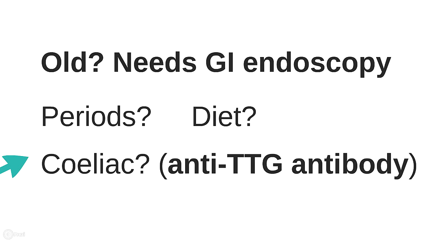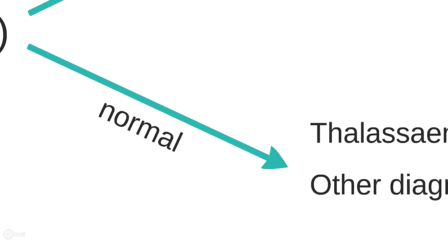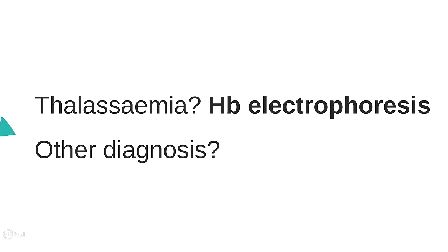Unexplained iron deficiency should also raise the possibility of celiac disease, and this will require revisiting the history and perhaps looking for an anti-TTG antibody in your blood tests. If the iron is normal, you might consider an alternative diagnosis which will include thalassemia, especially if there is a family history.